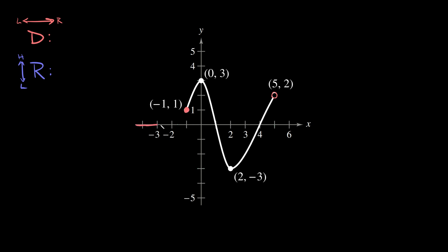We use the x-axis because it tells us how far things go to the left and to the right. Using the x-axis, we can see this leftmost point hits at negative 1. We can also confirm from the coordinate that the x-coordinate is negative 1. So the point furthest to the left on this function is at x equals negative 1.